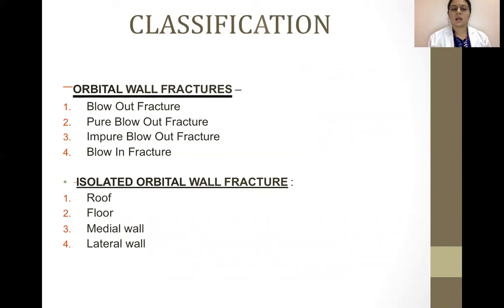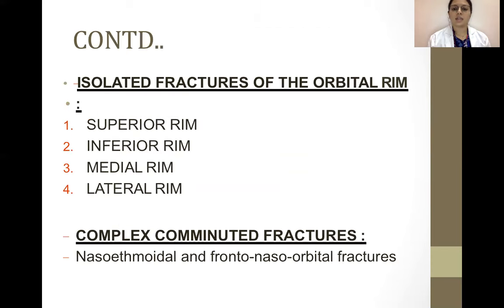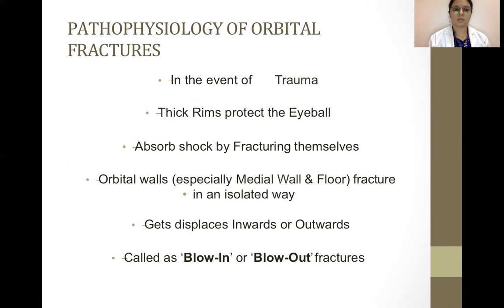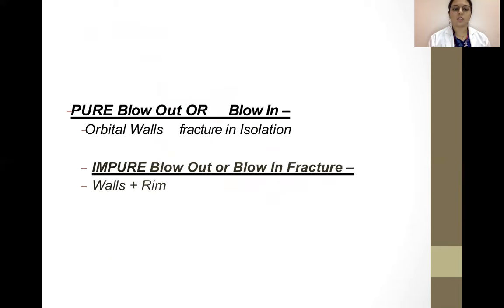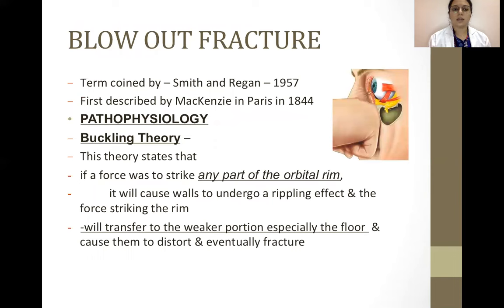Coming to orbital fractures: orbital wall fractures can be classified into blowout fractures (pure and impure) and blow-in fractures. Isolated orbital wall fractures include the roof, floor, medial wall, and lateral wall. Isolated fractures of the orbital rim include the superior, inferior, medial and lateral rims. Complex communal fractures include nasoethmoidal and frontonaso-orbital fractures. Pathophysiology: in the event of trauma, thick rims protect the eyeball by absorbing shock through fracturing themselves. Orbital walls, especially the medial wall and floor, fracture in an isolated way and are displaced inwards or outwards — called blow-in or blowout fractures. Blowout fracture is a term coined by Smith and Regan. The buckling theory states that a force striking any part of the orbital rim causes walls to undergo a rippling effect, transferring force to the weaker portions, especially the floor, causing them to distort and eventually fracture.